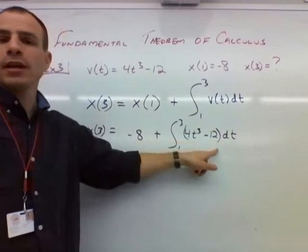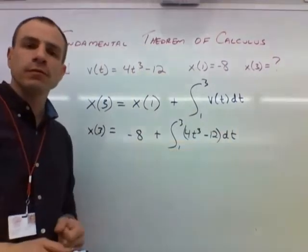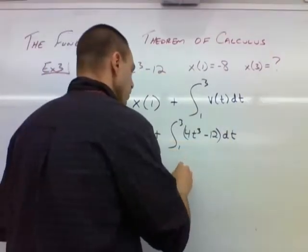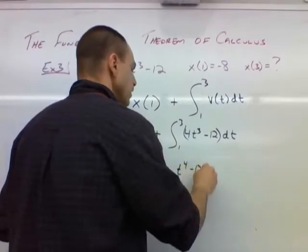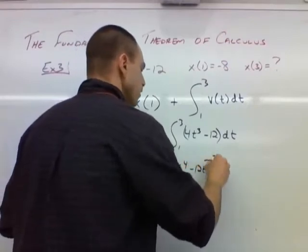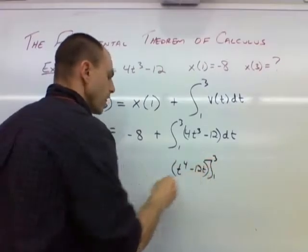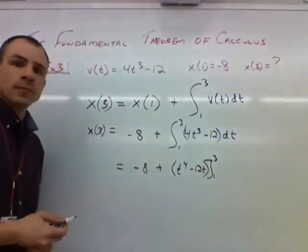So what happens when we anti-derive 4t cubed minus 12? It's going to become t to the 4th minus 12t. That's being evaluated from 1 to 3, and we're going to add that to negative 8.